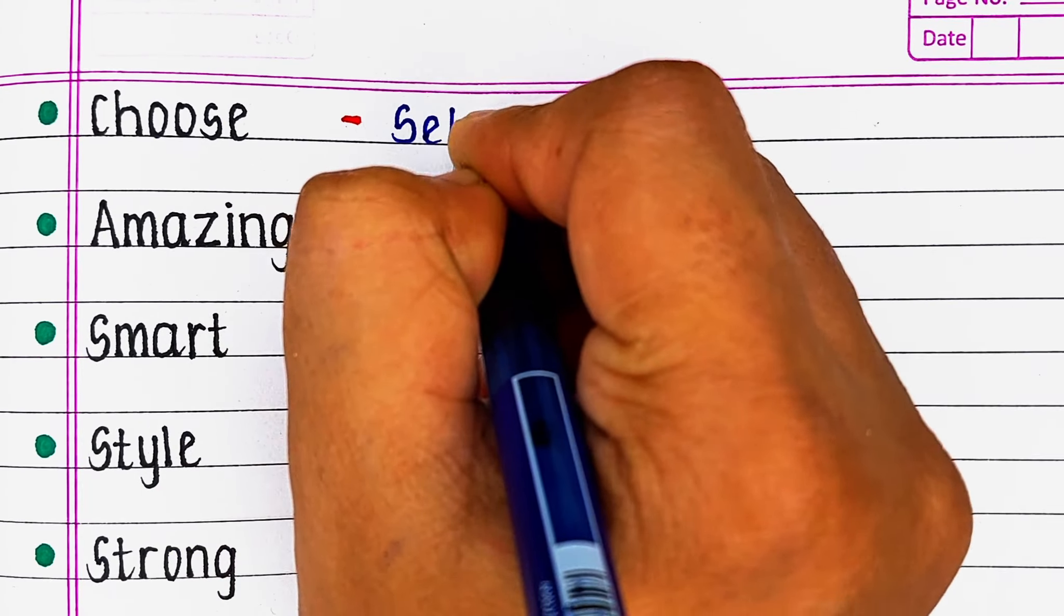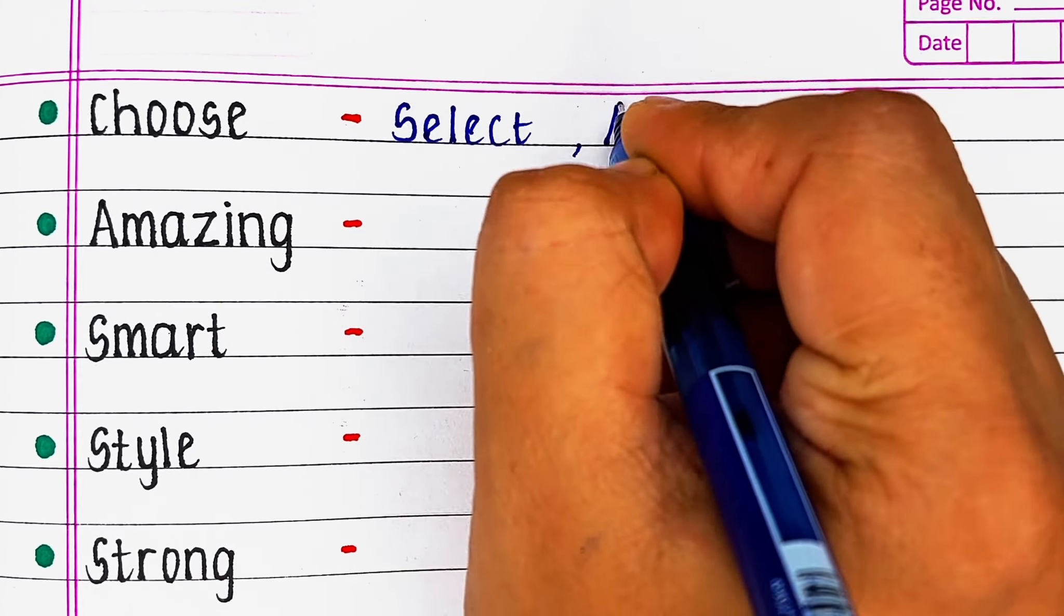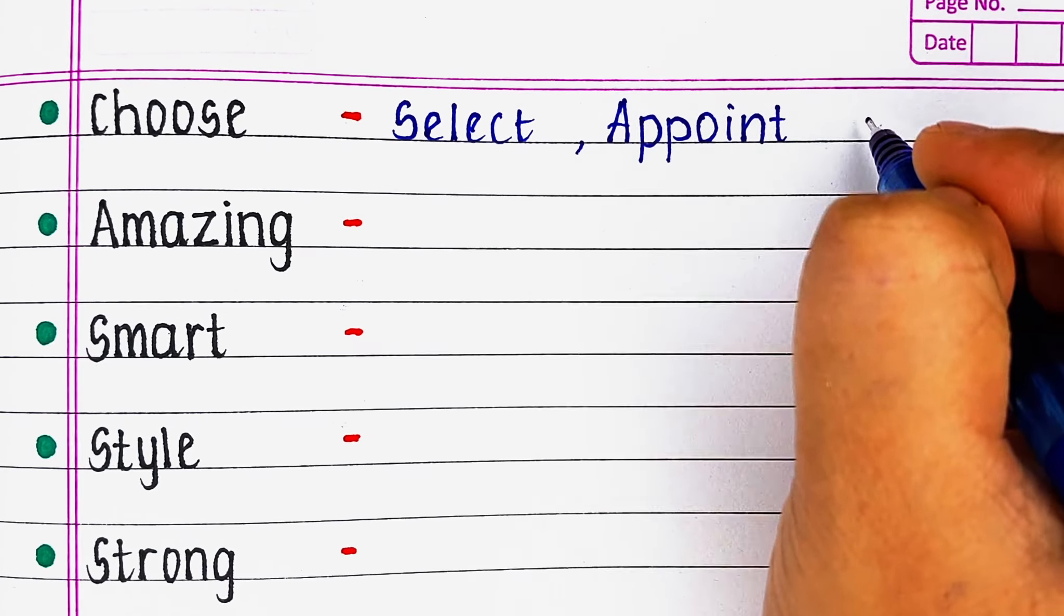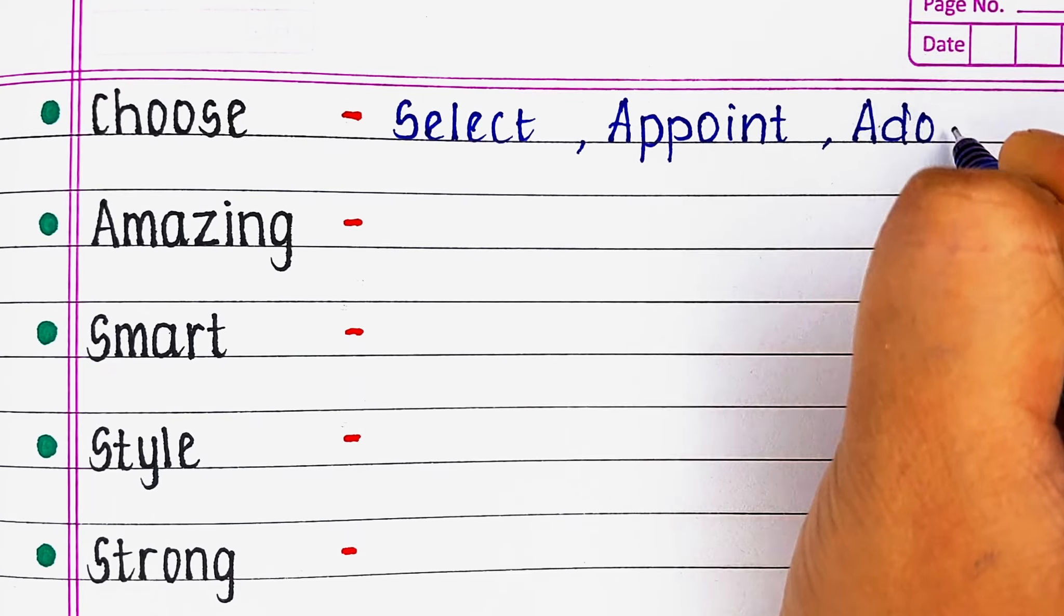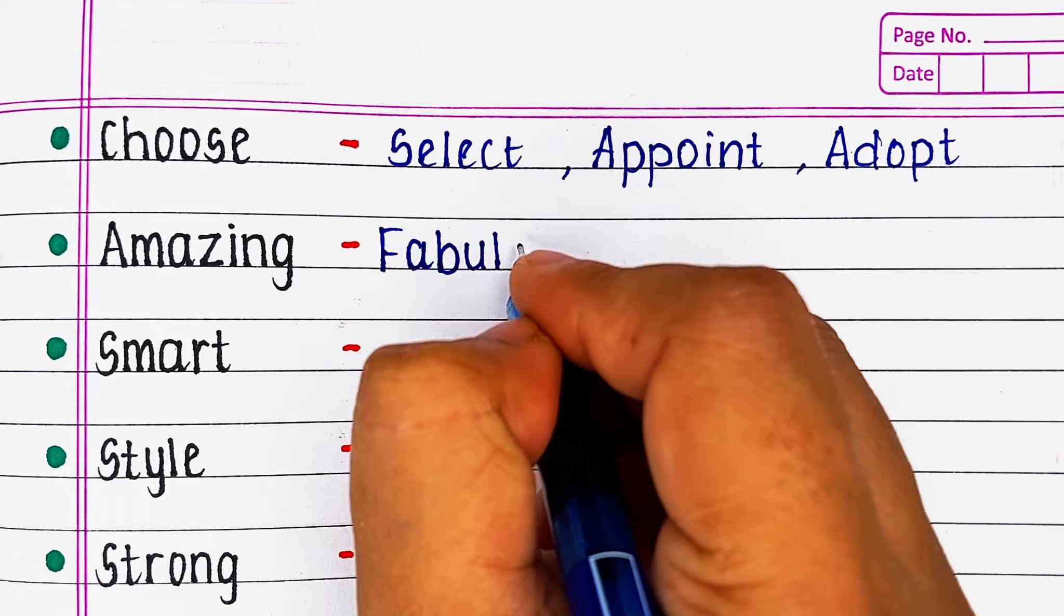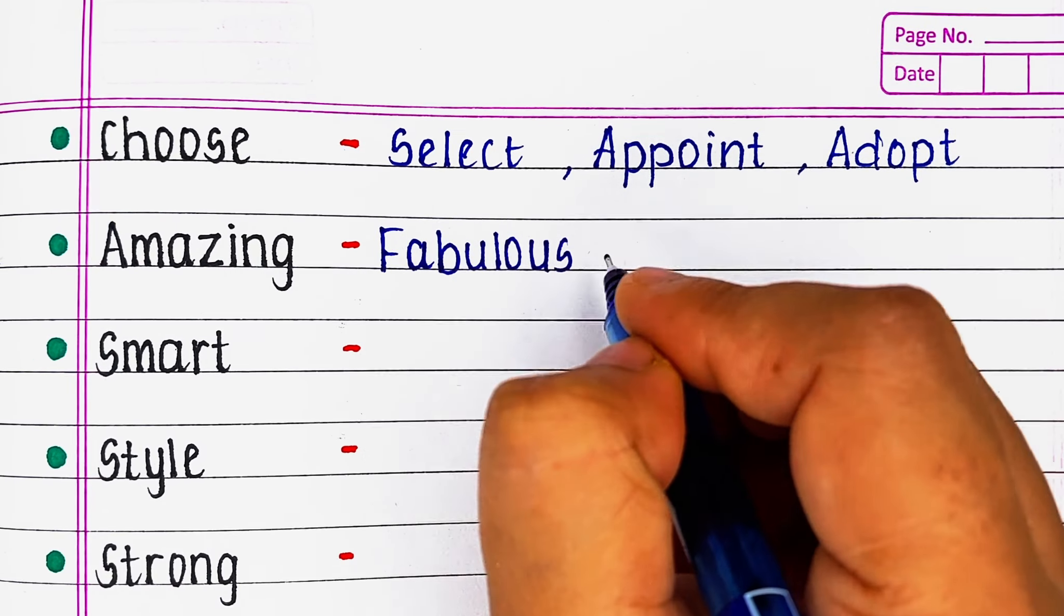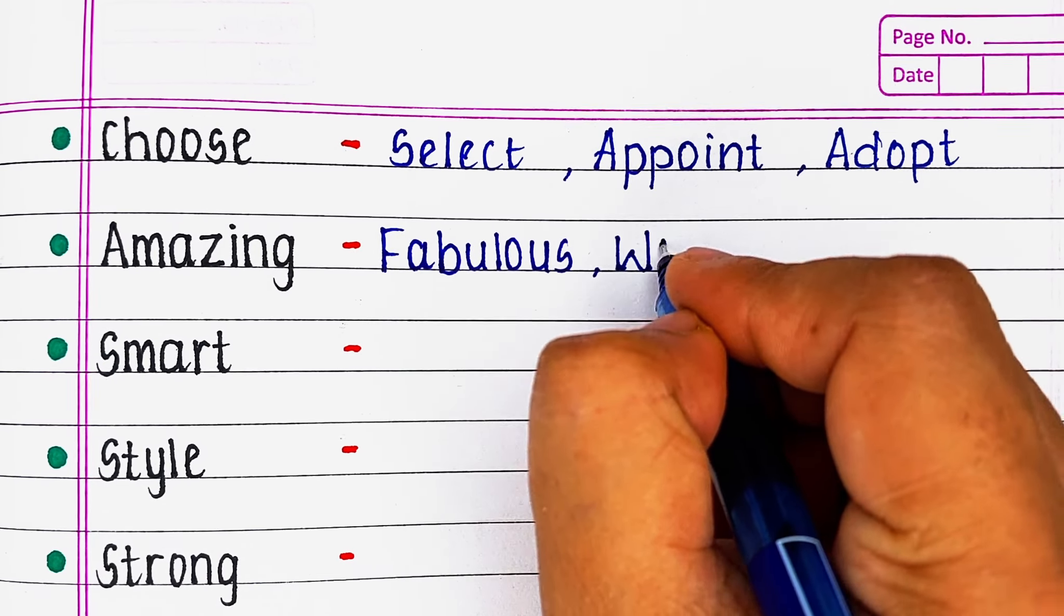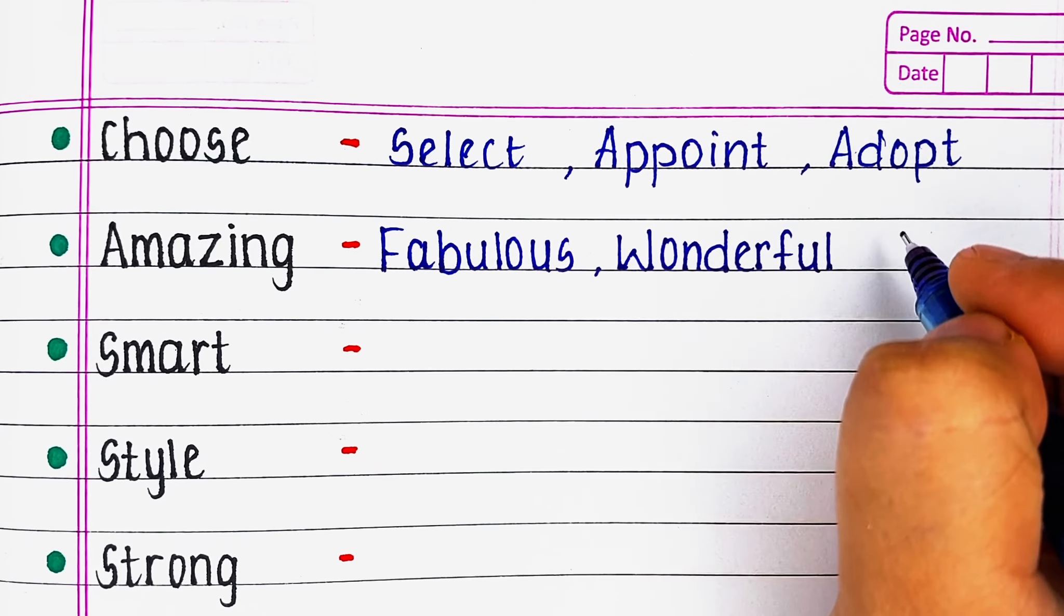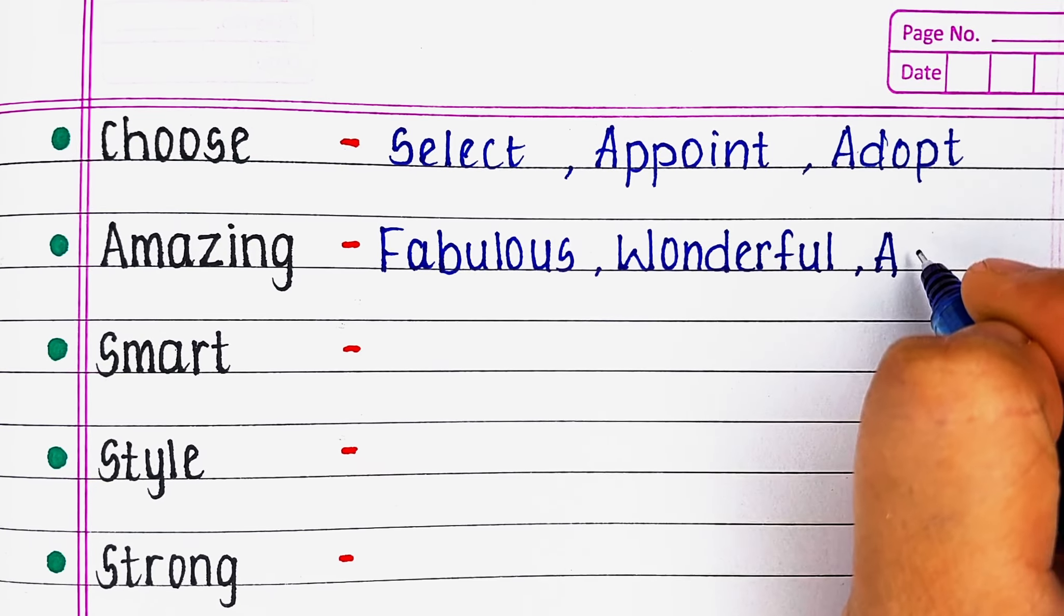Next word is Choose. Its synonyms are Appoint and Adopt. Next word is Amazing. Its similar meaning words are Fabulous, Wonderful and Awesome.